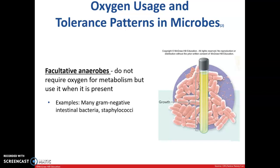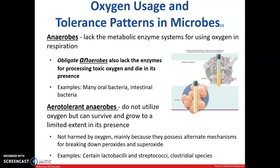Facultative anaerobes do not require oxygen for metabolism but use it when it is present. Anaerobes lack the metabolic enzyme systems for using oxygen in respiration — obligate anaerobes also lack the enzymes for processing toxic oxygen and will die in its presence. Examples are many oral and intestinal bacteria. Aerotolerant anaerobes do not utilize oxygen but can tolerate it, surviving and growing to a limited extent in its presence because they possess alternate mechanisms for breaking down toxic byproducts. Certain lactobacilli and streptobacilli fall in this category.